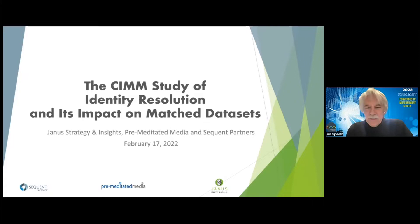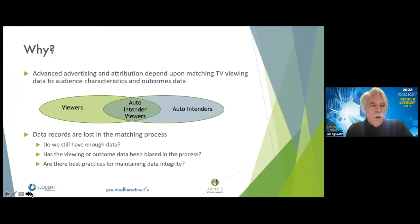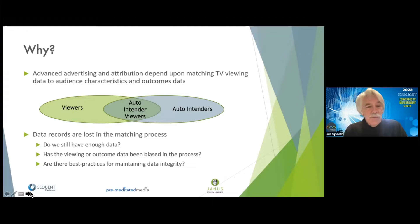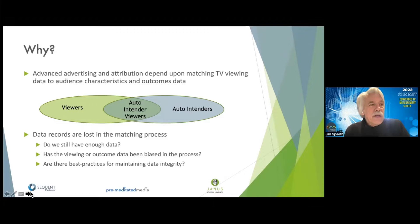Let me share the story of our study to date. Let me begin with the question: why are we doing this? Everyone knows about the importance of data matching to advanced audiences, to attribution modeling, and to lots of other things in our ecosystem. That role requires matching viewers to outcomes. In this example we've got auto intenders, and obviously the two data sets don't overlap perfectly — nothing in our world does — so there is an intersection between them, and you always have to ask: did the source data survive the matching process? Do we have enough data?